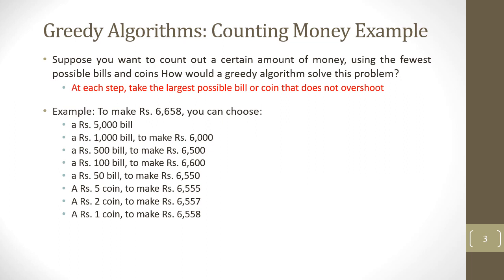For example, if we have to pay a bill of 6658 rupees, we will start off with a 5000 bill, then a 1000 bill, which makes it 6000 rupees. We are left with 658 rupees. So the largest bill that can be paid is the 500 bill, then the 100 bill, leaving us with 58 rupees. The next largest is a 50 rupees bill, then the 5 rupees coin, followed by a 2 rupees coin, and a 1 rupees coin. So that is the fewest possible bills and coins required to pay 6658 rupees.